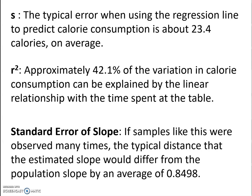Now, standard error of the slope. If samples like this were observed many times, the typical distance that the estimated slope would differ from the population slope would be about an average of 0.8498. That one's a little bit newer, and we'll talk more about that in this unit.